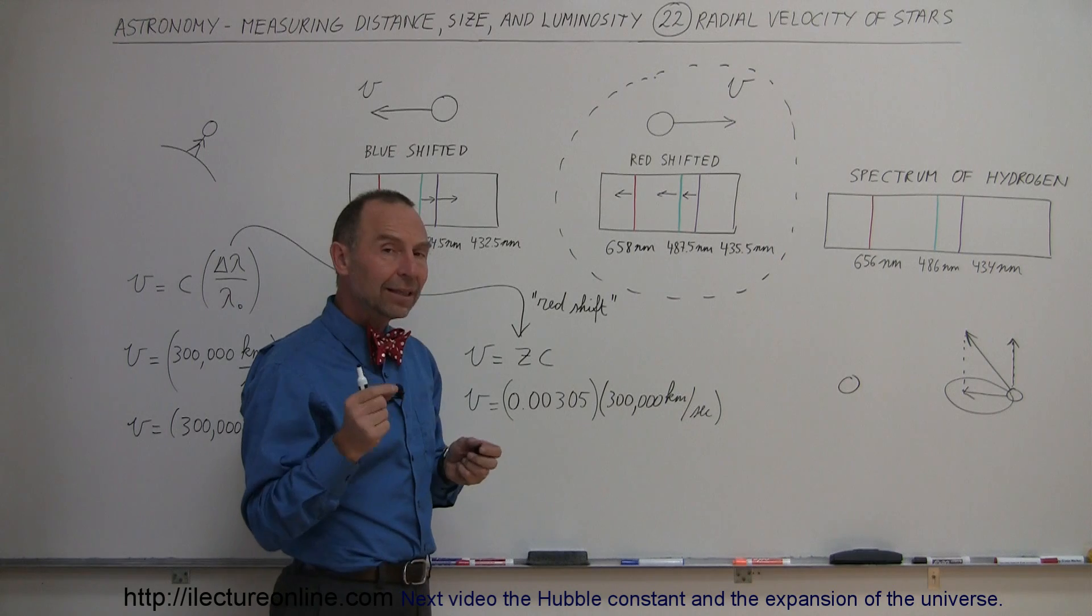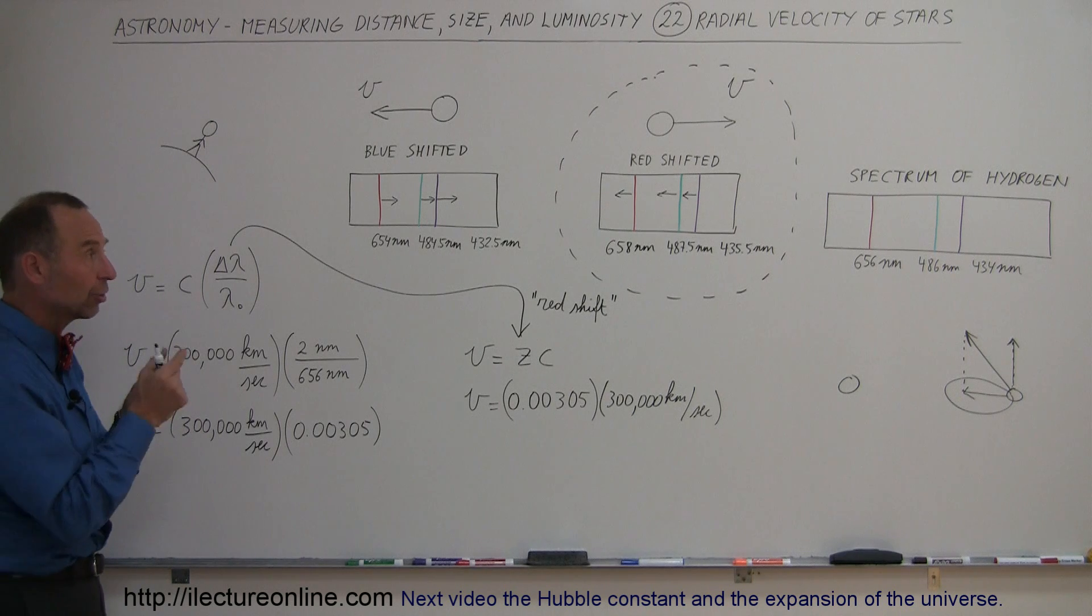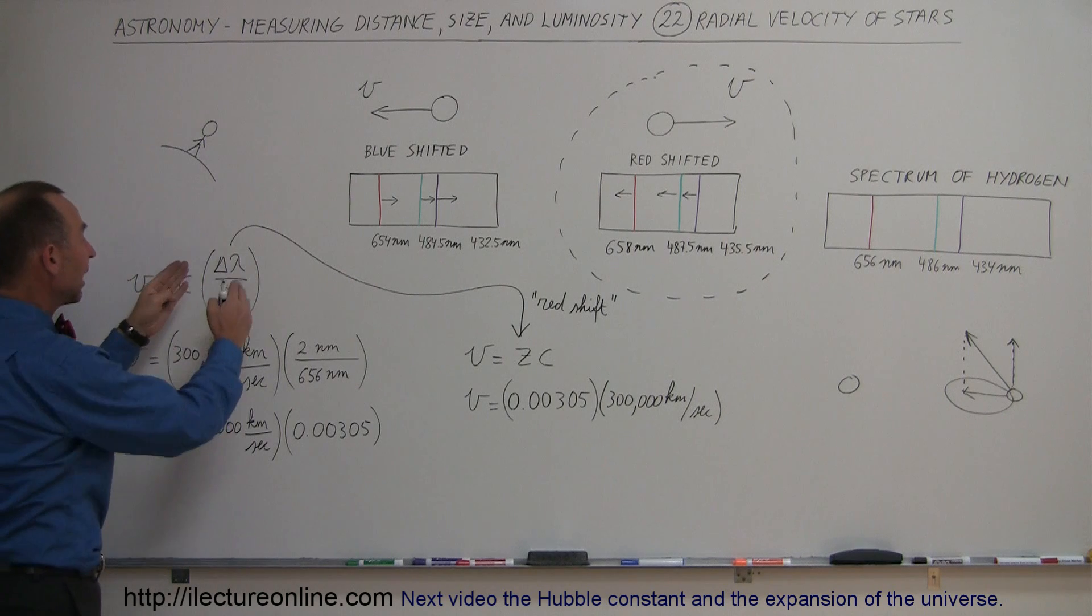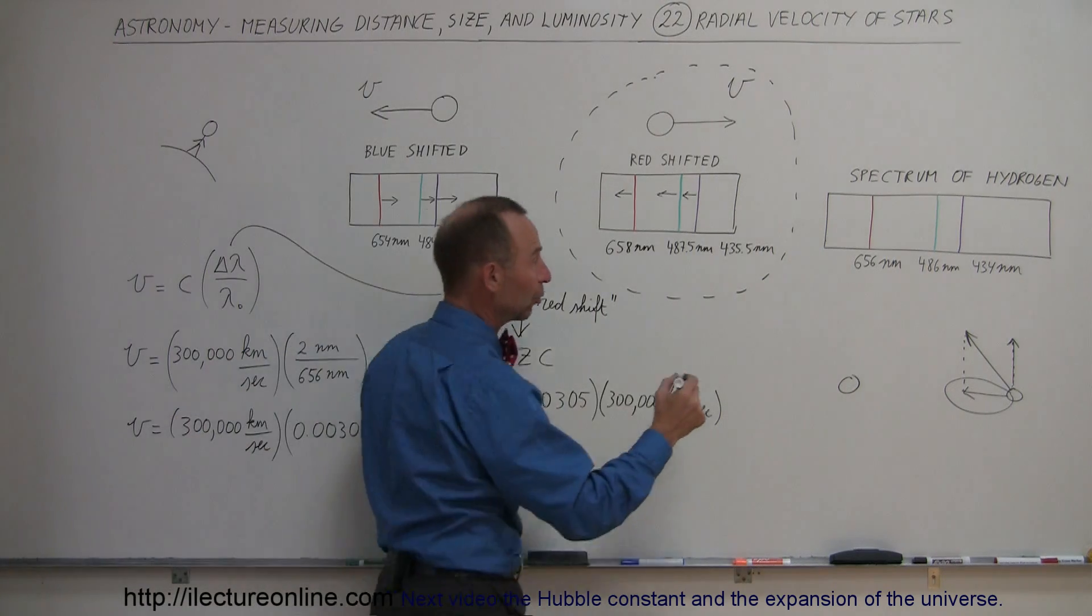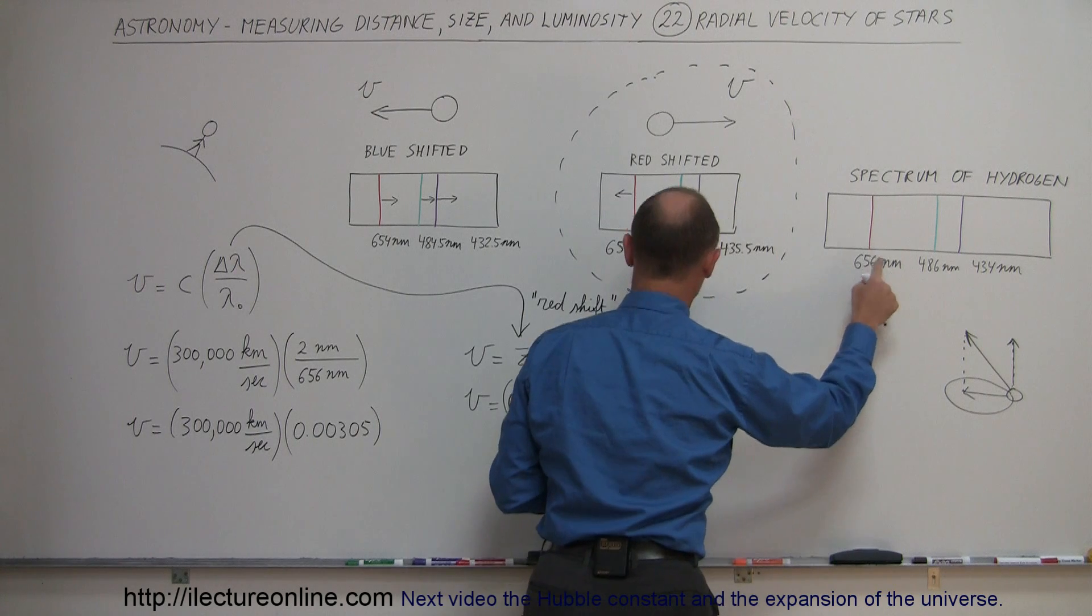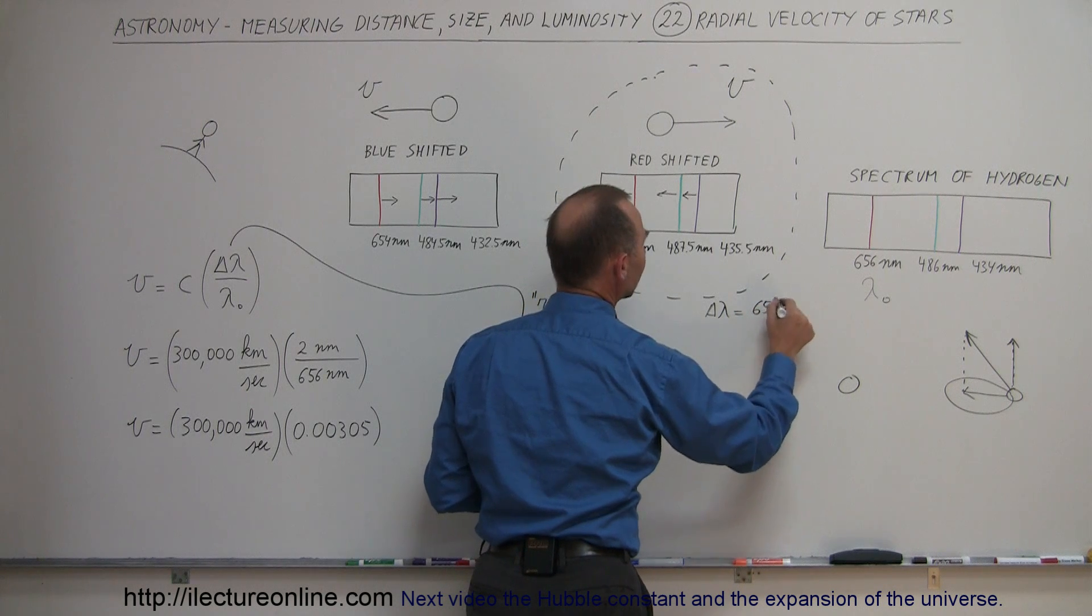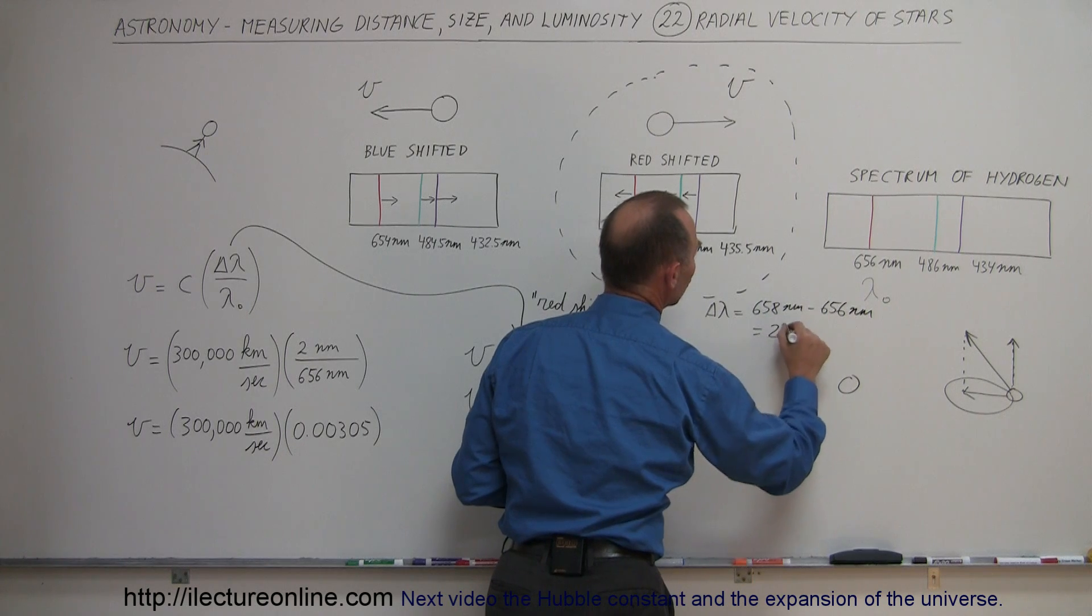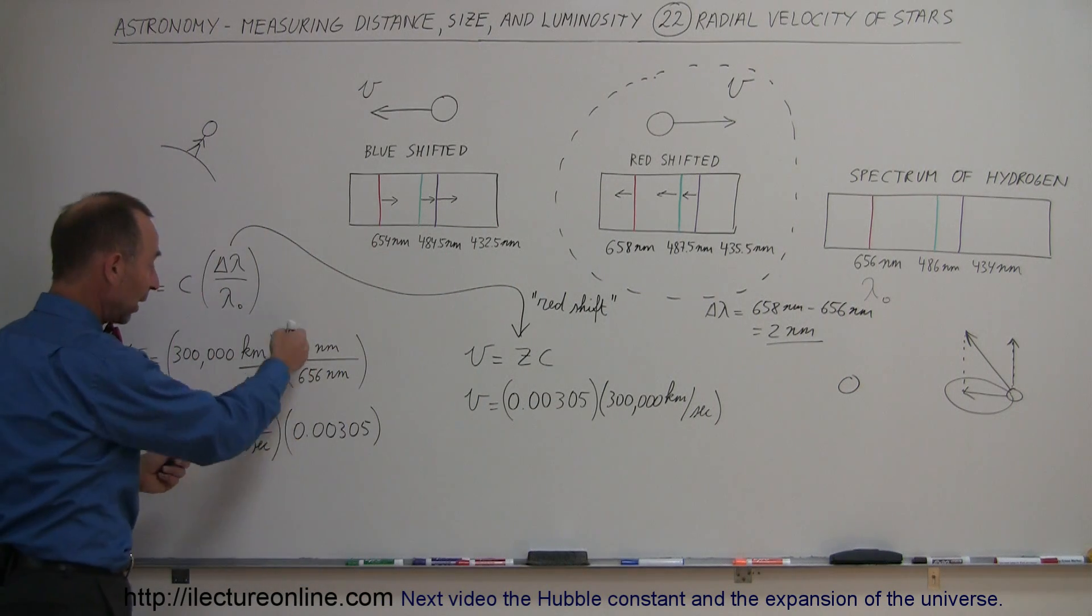So, how we can then get the velocity from that is simply to throw it into this equation right here. The velocity in a radial direction of an object, either moving towards us or moving away from us, is equal to the speed of light times the ratio of the amount of the shift of the wavelength divided by the original wavelength. So here, let's say this would be the original wavelength. And let's say that we go from 656 to 658. So, the delta shift is equal to 658 nanometers minus 656 nanometers, which is 2 nanometers. So, the shift is 2 nanometers, and the original was 656. So, when we take that ratio right here, we get 0.00305.